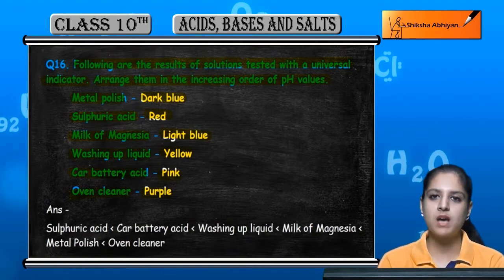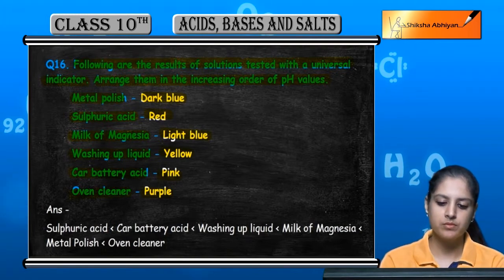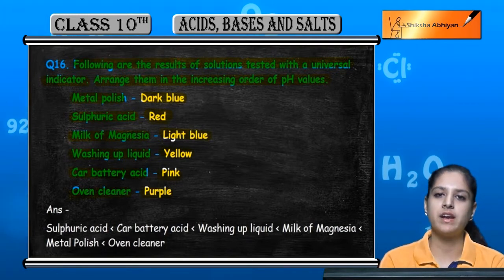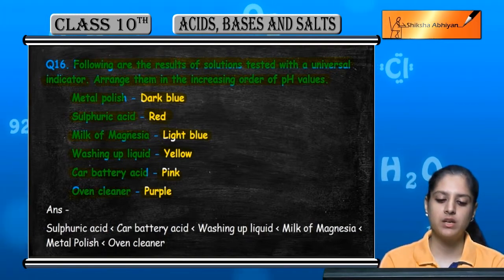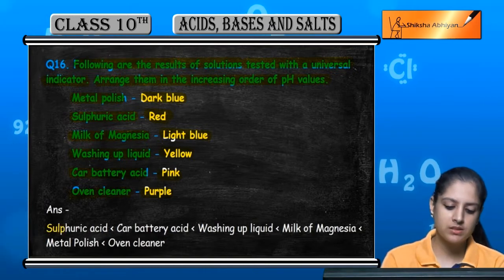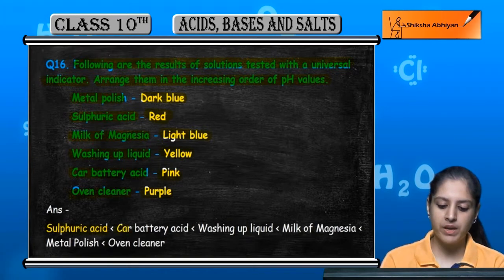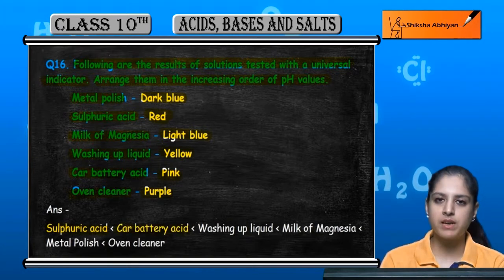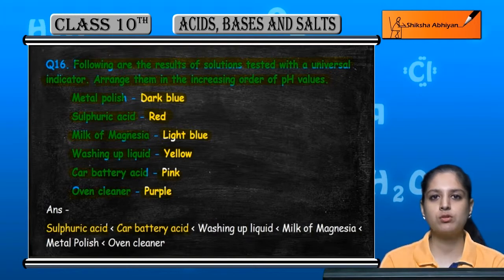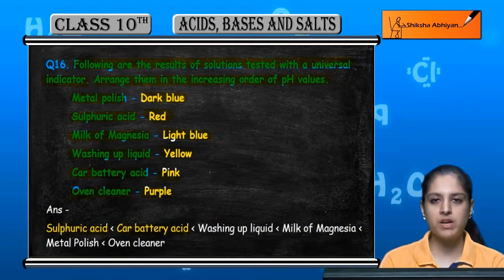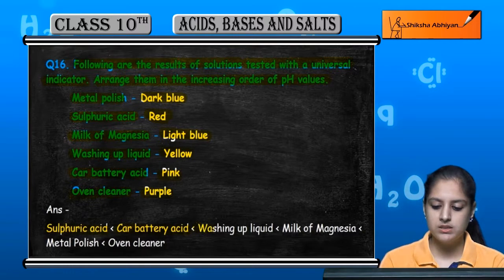So we will start from the most acidic. The most acidic is the red one. So in this case, red is sulfuric acid — it will have the lowest pH. After that comes pink, which is car battery acid. It is slightly less acidic than sulfuric acid, so its pH will be a bit higher.